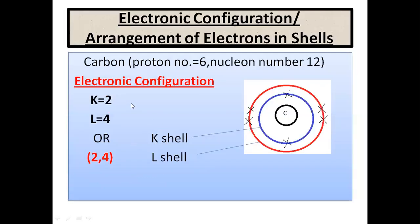Now we can arrange electrons. Carbon has proton number 6 and nucleon number 12. The first shell (K shell) can accommodate 2 electrons, so out of 6 electrons we place 2 in the K shell. That leaves 4 electrons remaining. These 4 electrons go to the second shell (L shell), which has a capacity of 8 electrons. So the electronic configuration is K equals 2 and L equals 4.